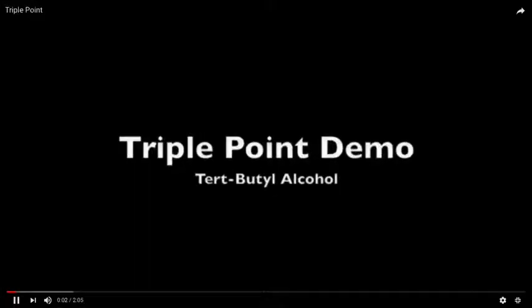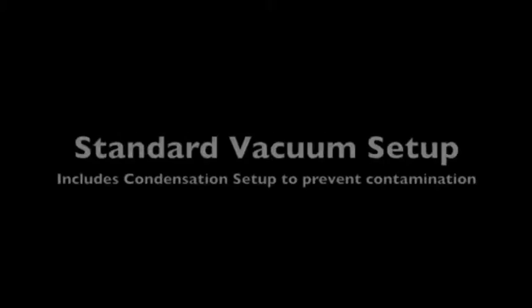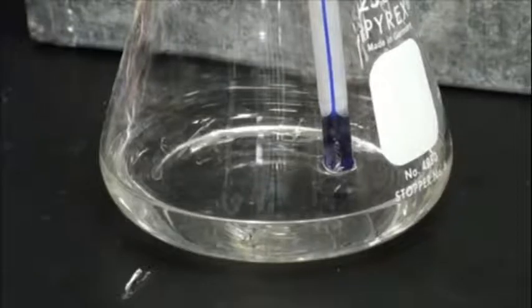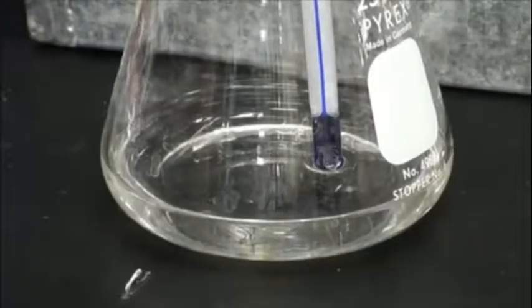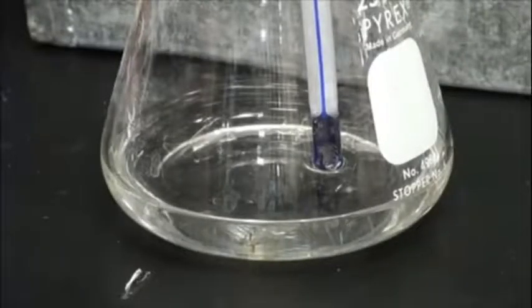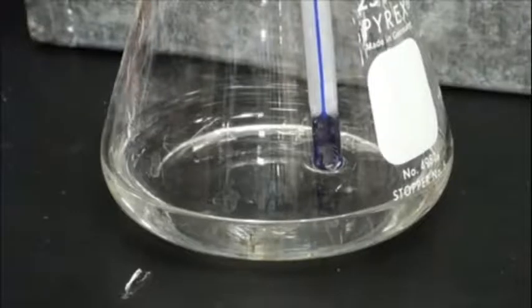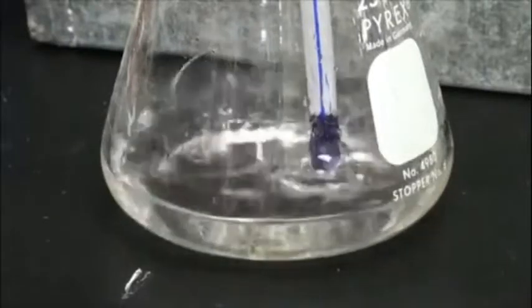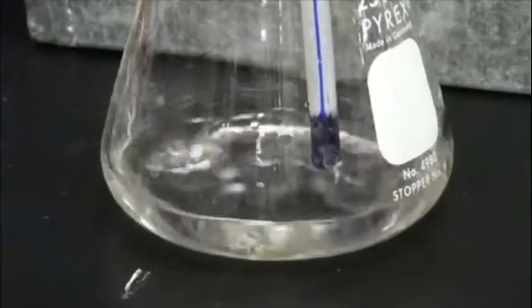This is tertiary-butyl alcohol. So we've got this alcohol in our flask. We're reducing the pressure, and it starts to boil.